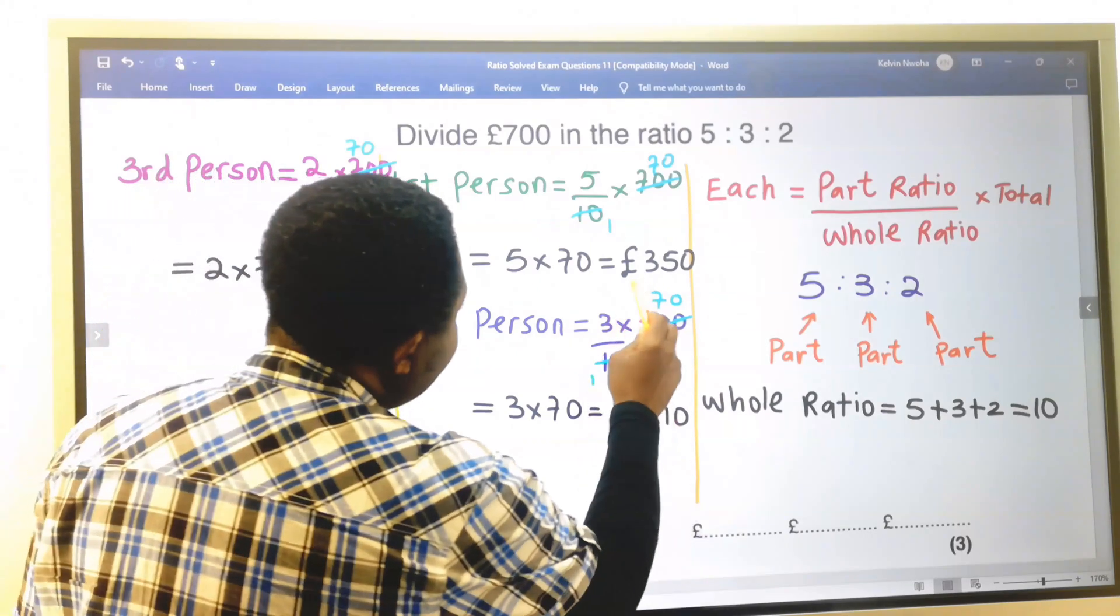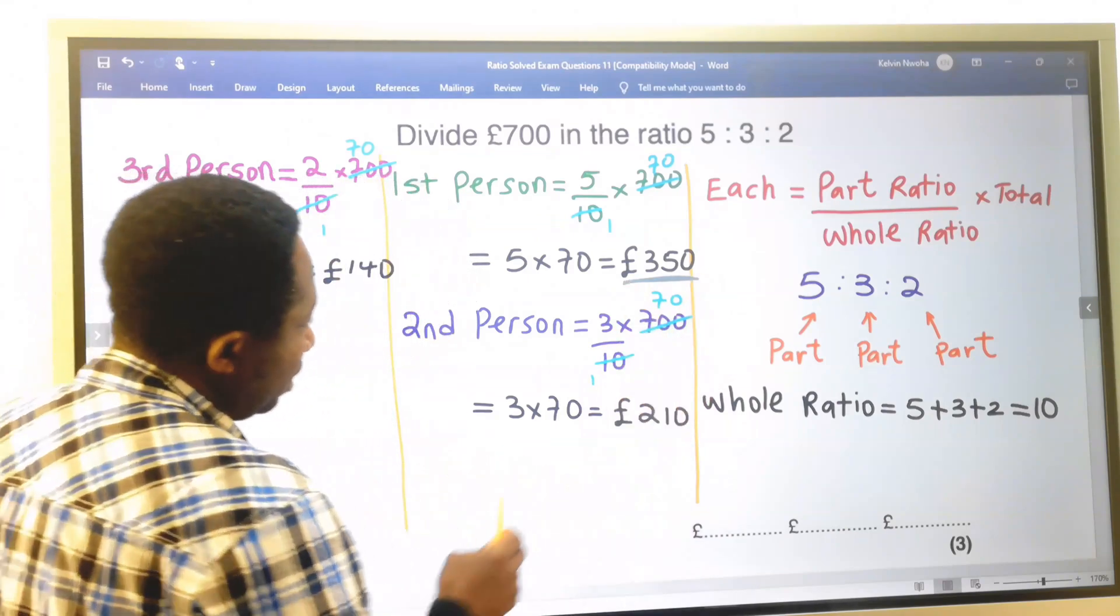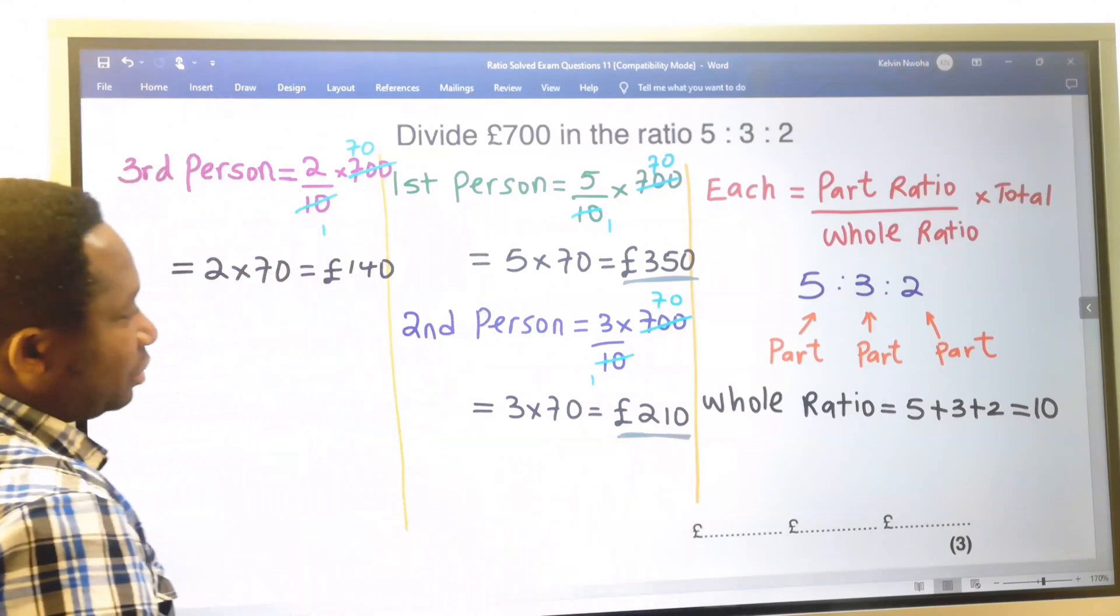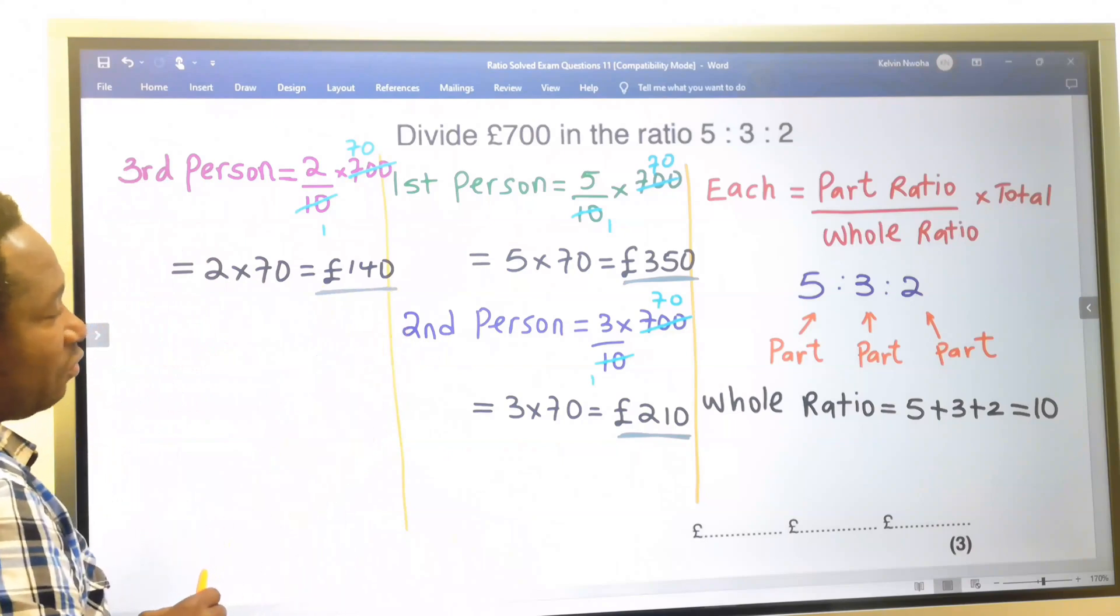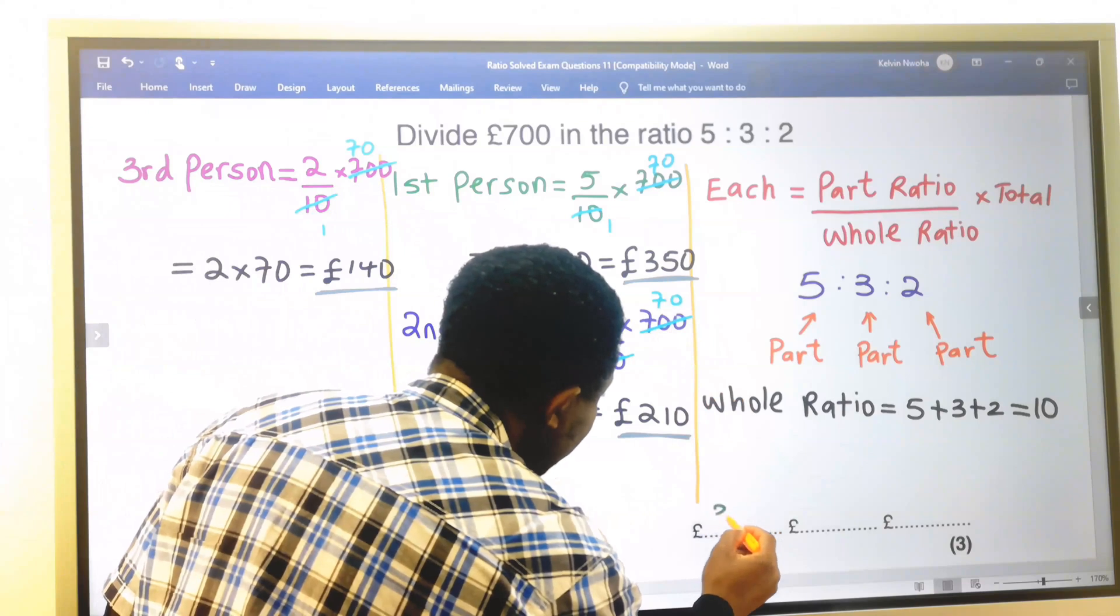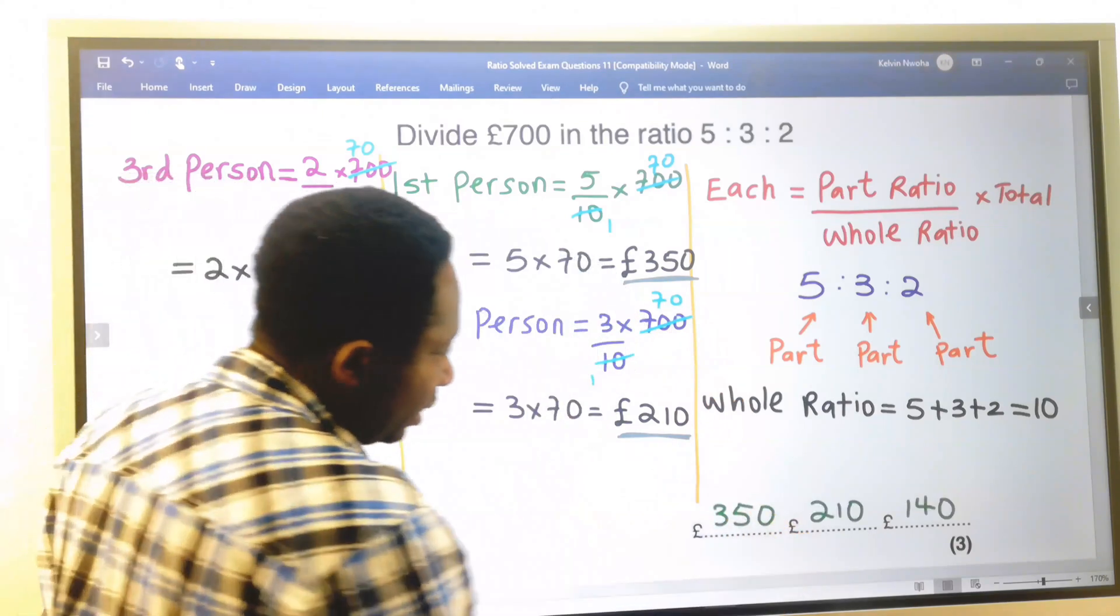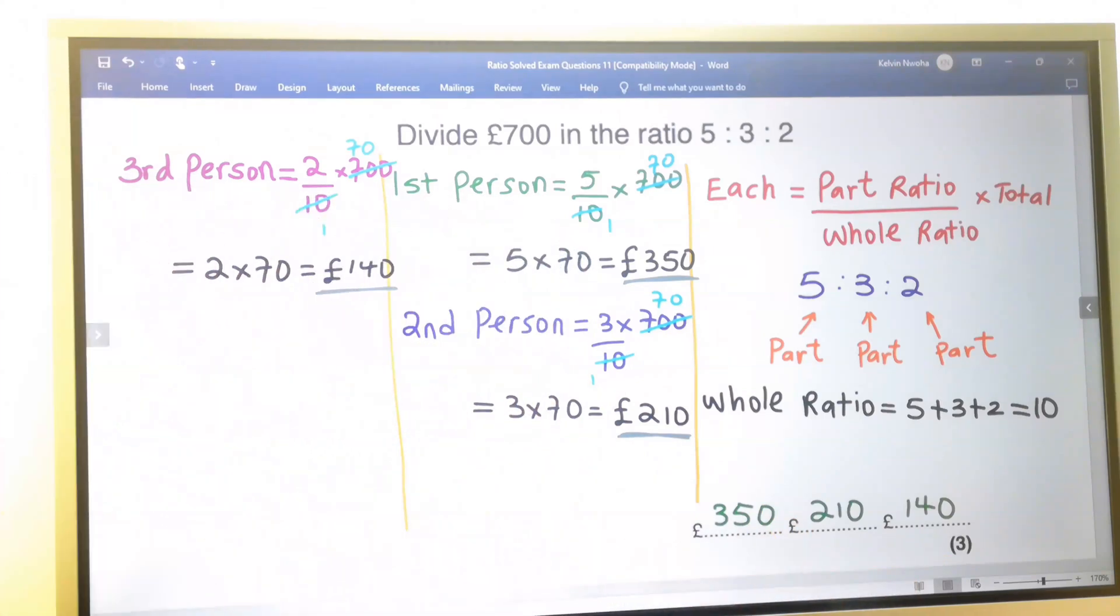The first person received 350 pounds. The second person received 210 pounds. And the third person received 140 pounds. And we are going to write each of these answers in the space provided. And the solution is completed.